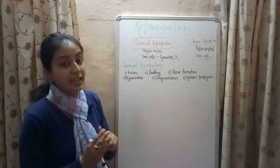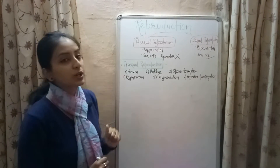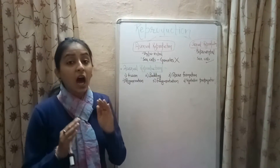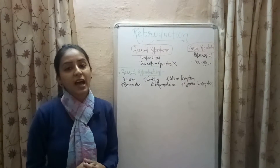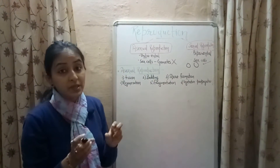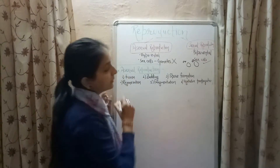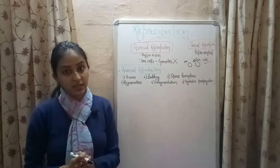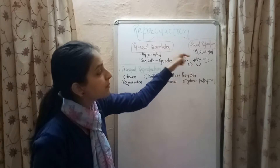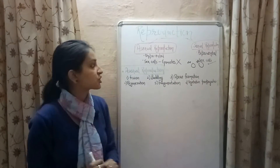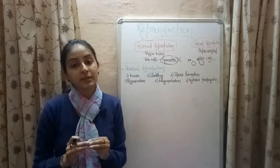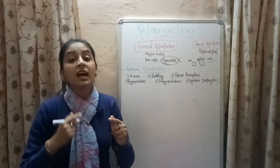There are two types of reproduction: asexual reproduction and sexual reproduction. Asexual reproduction is the type in which offspring are produced from a single parent and sex cells, also known as gametes, are not involved. In sexual reproduction, offspring are produced as a result of fusion of sex cells — male and female gametes — of two parents. The basic difference is that asexual reproduction is uniparental whereas sexual reproduction is biparental.